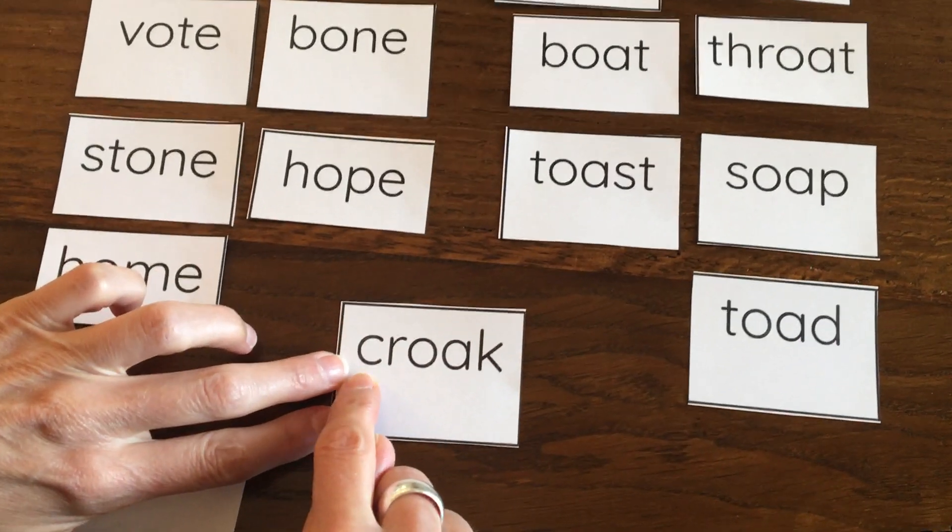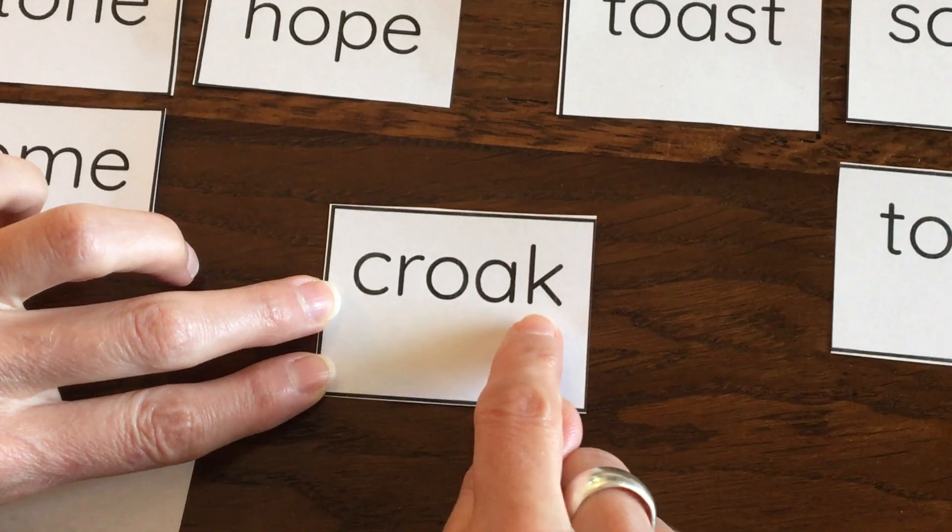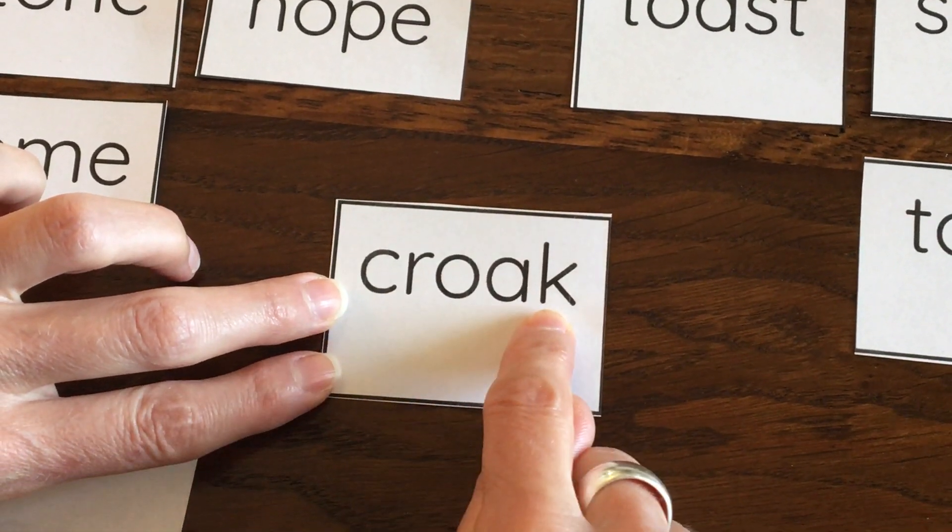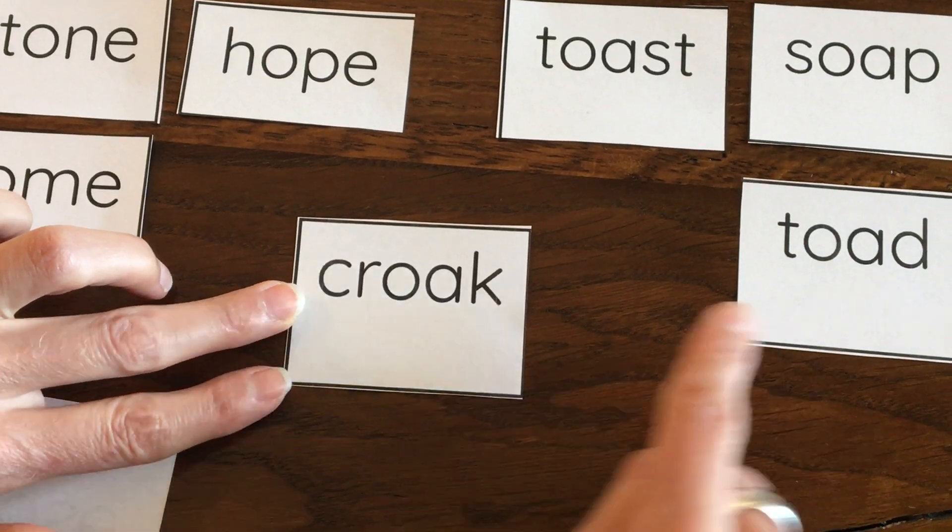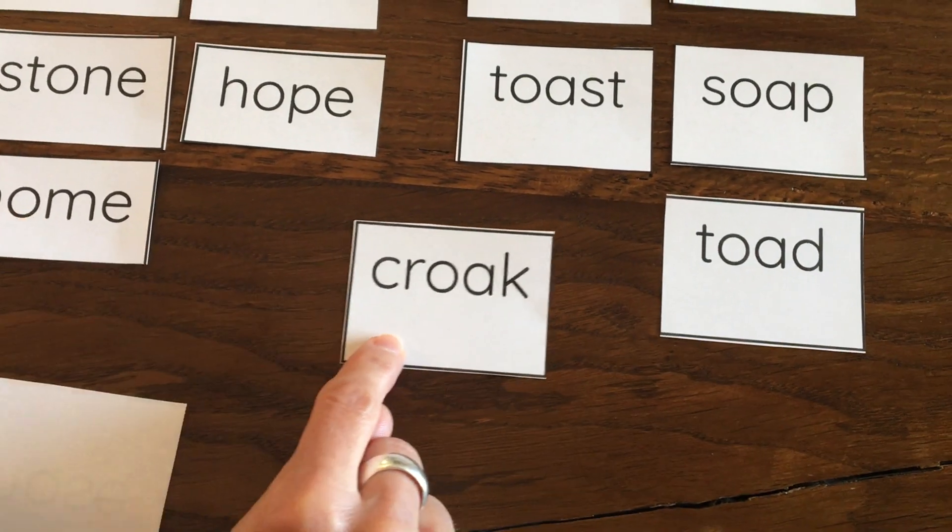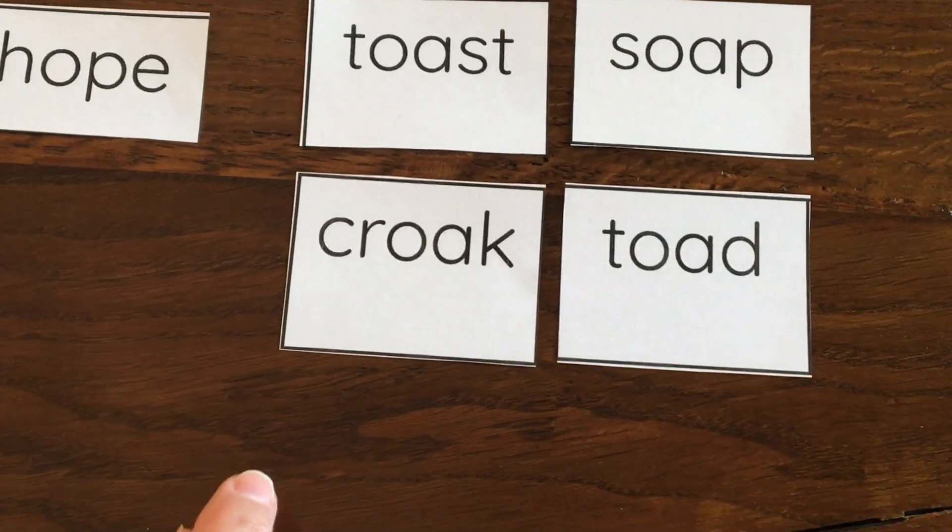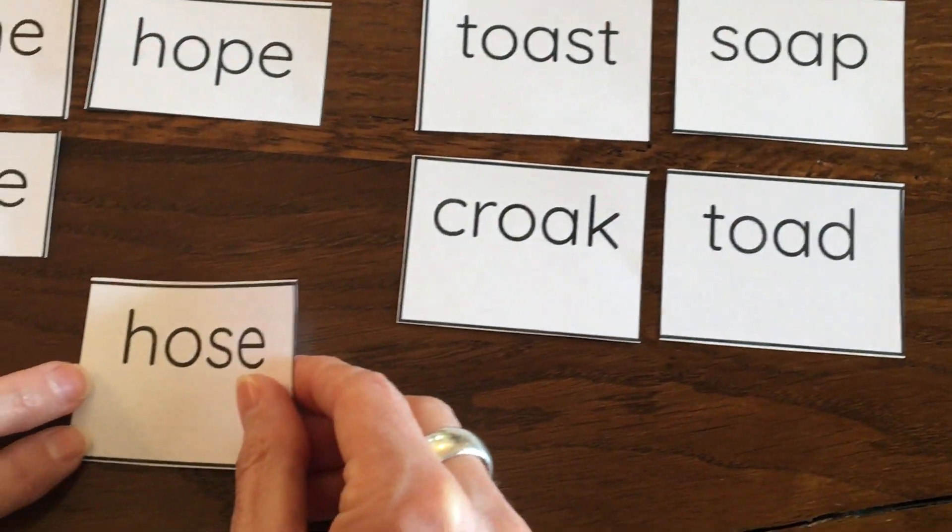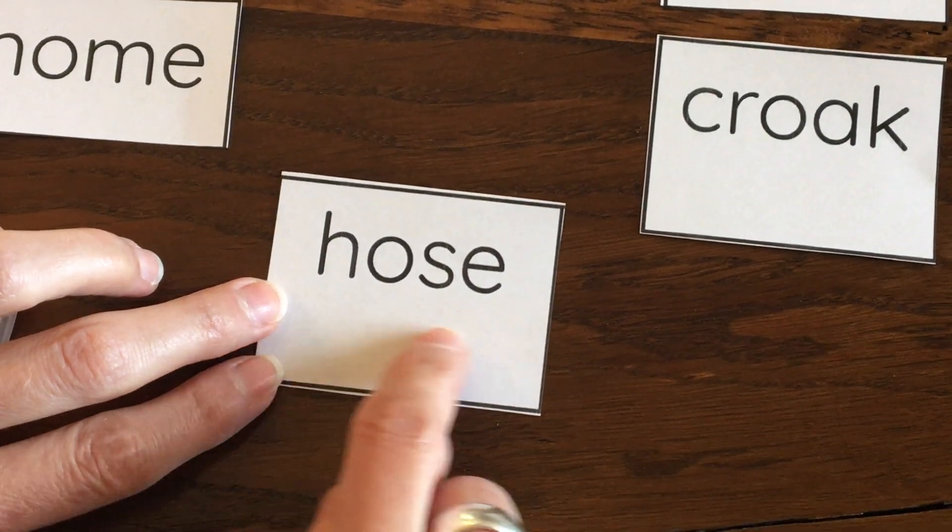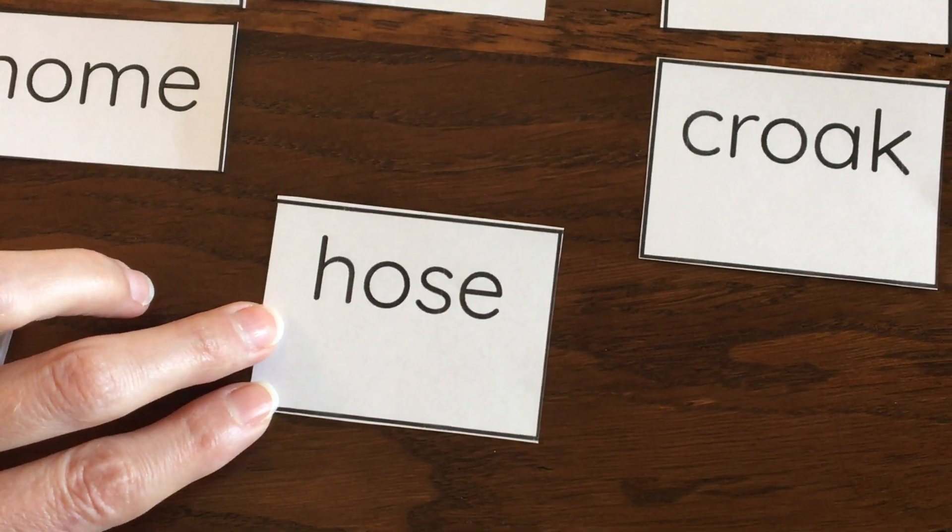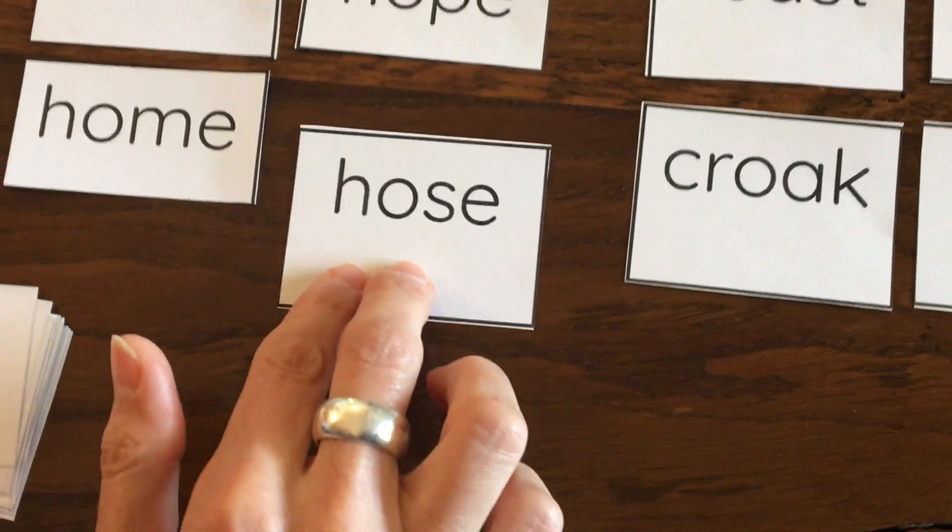Two more. Help me. Croak. Well, that goes with toad because this is the sound that a toad or a frog makes. It says croak. And last one here. Hose. That's what we use to water the garden. A hose.